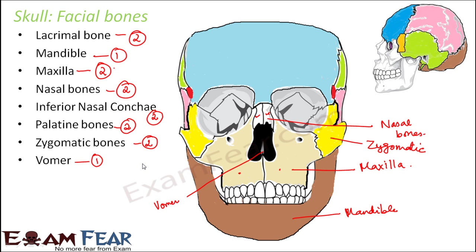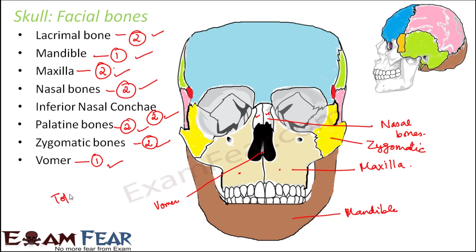All these bones together form the facial bones, totaling 14: two lacrimal, one mandible, two maxilla, two nasal, two inferior nasal conchae, two palatine, two zygomatic, and one vomer. So now you understand how cranial bones and facial bones together form the skull.